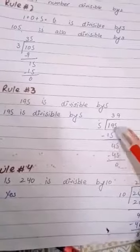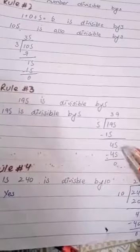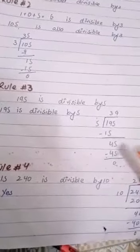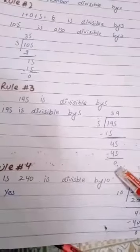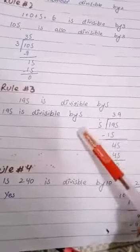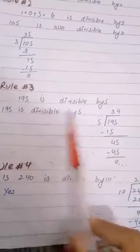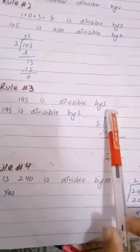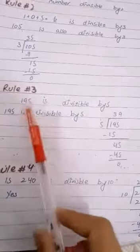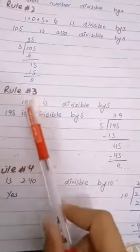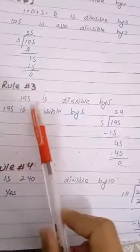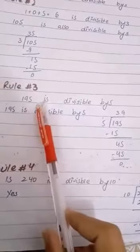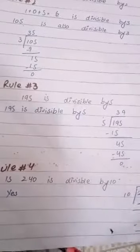195 کو 5 سے divide کریں تو 39 آتا ہے۔ یہ دیکھیں 195 پہ divisible ہے کیونکہ unit place پہ 5 ہے۔ اگر unit place 0 ہوتا تو بھی یہ 5 پہ divisible ہوتا۔